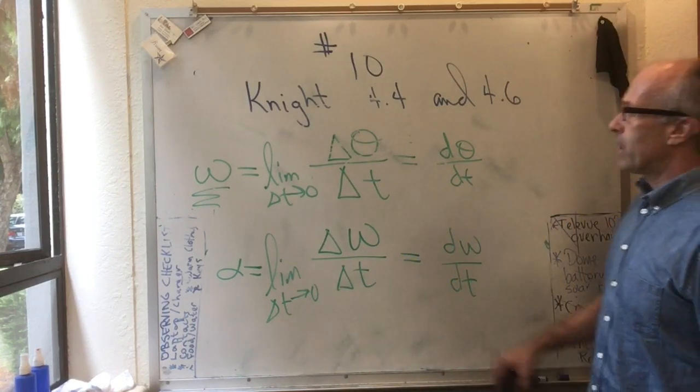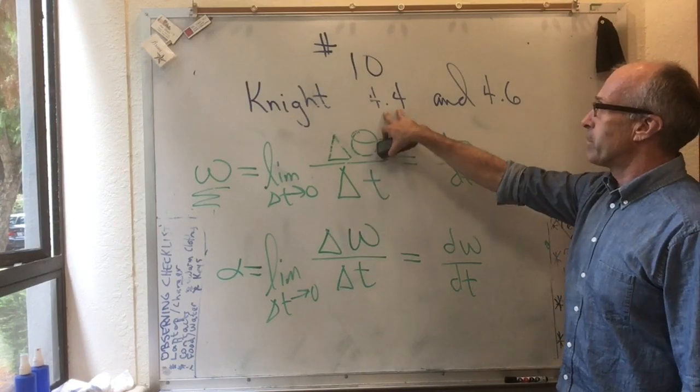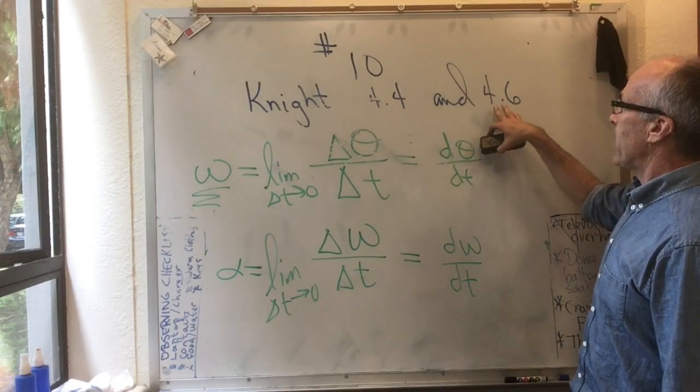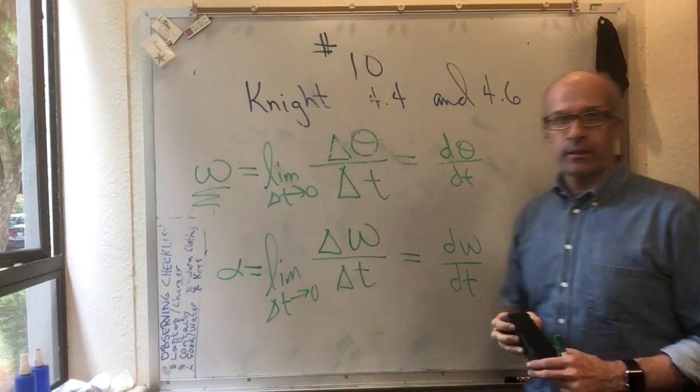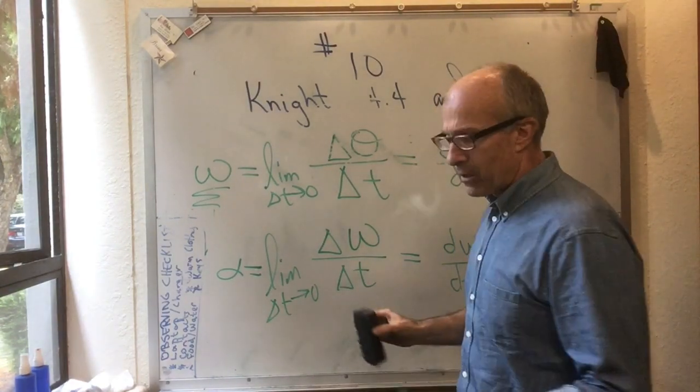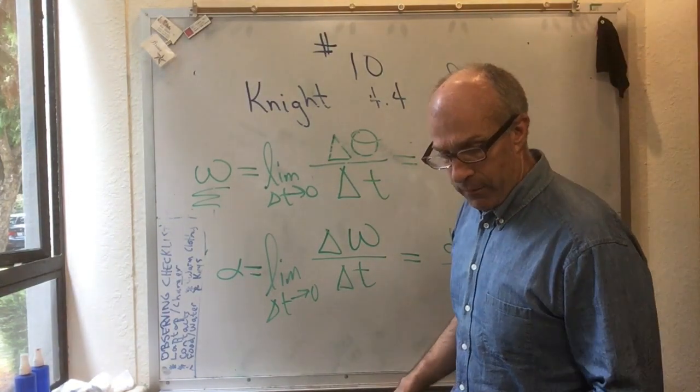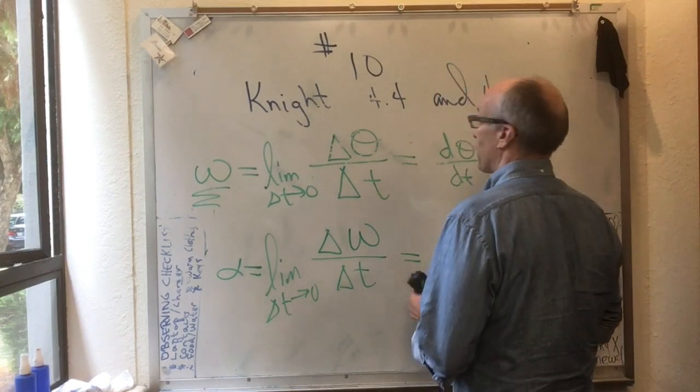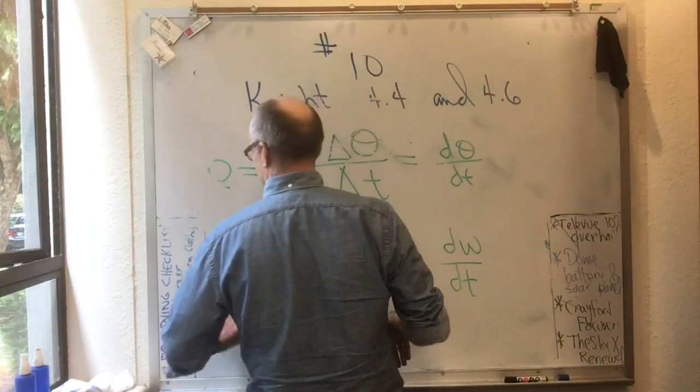So I've defined angular velocity from Knight 4.4, and I've defined angular acceleration from Knight 4.6. Now I'm not going to do anything more on Knight 4.5 and Knight 4.6 in this flipped lecture. I'm going back and I'm going to finish off Knight 4.4.